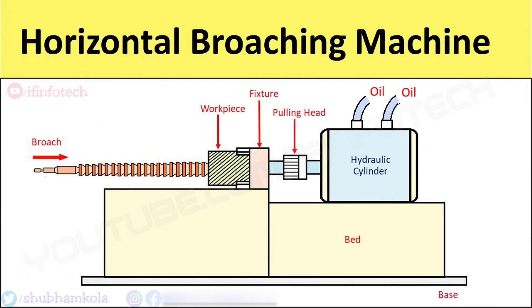The horizontal broaching machine is usually a pull type of broaching machine. The bed is approximately double the size of the broach stroke.